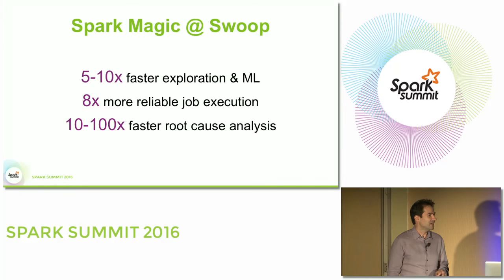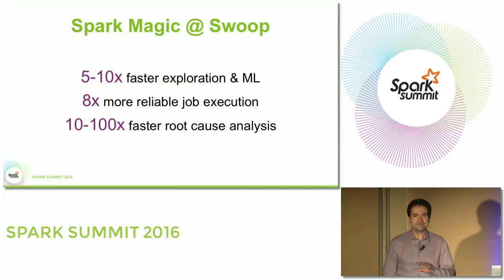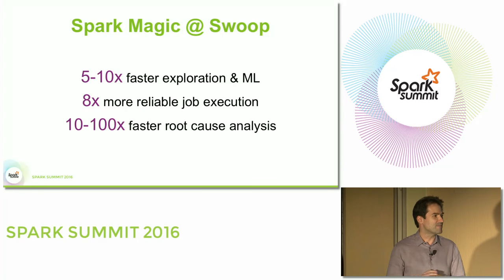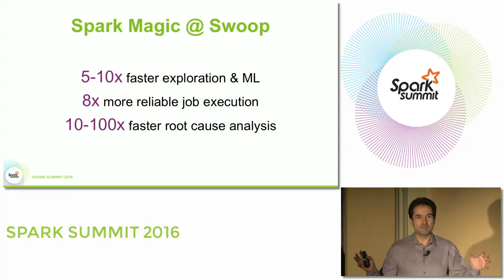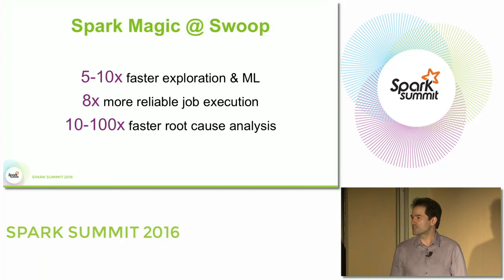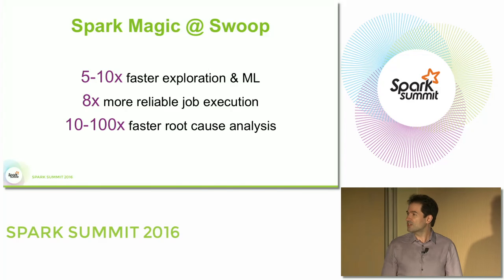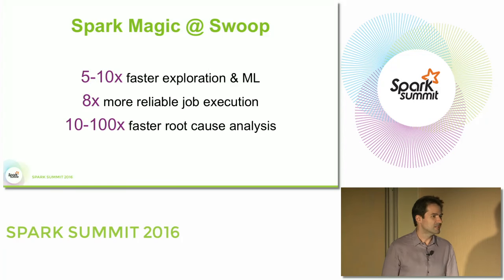The kind of magic that helps us do interactive data exploration and machine learning about five to ten times faster. The same kind of magic that made the mean time between failures for our Spark jobs go up by about 800%, and when our jobs do fail occasionally, helps us do root cause analysis in minutes — usually less than five minutes, as opposed to more than five hours.